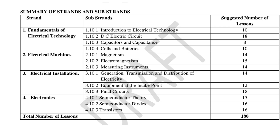The fourth strand is electronics, where learners study semiconductor theory and semiconductor diodes and transistors. All these substrands are to be covered in 180 lessons per academic year.